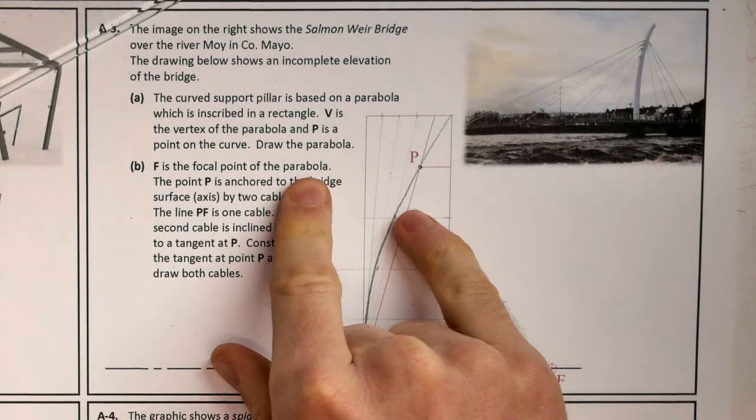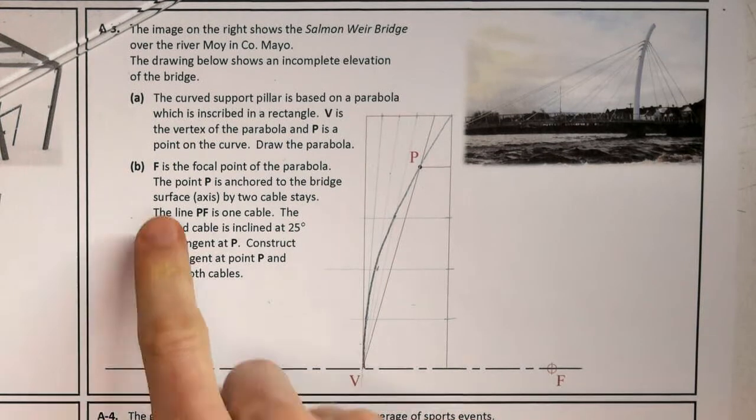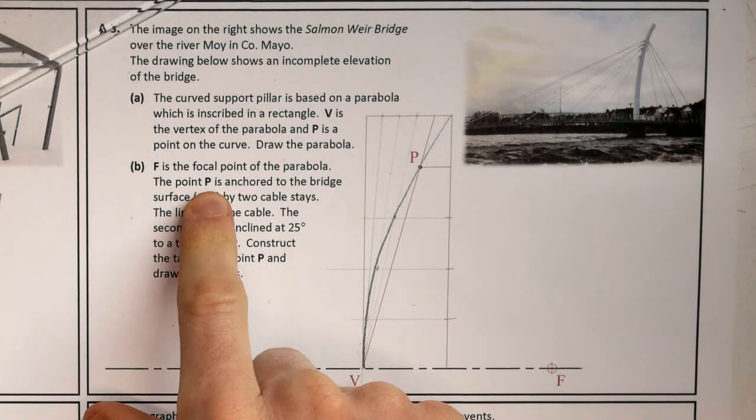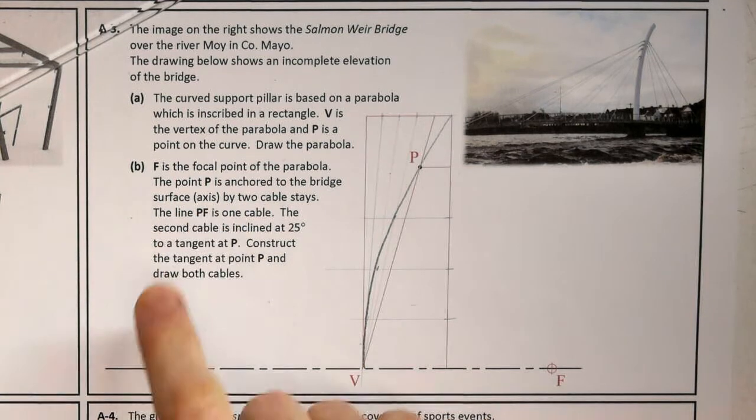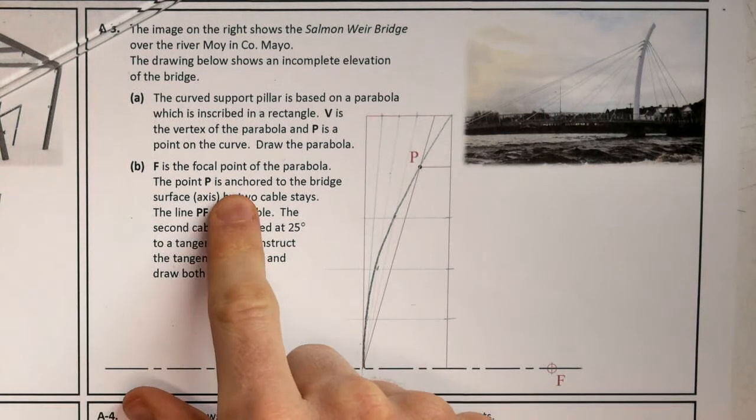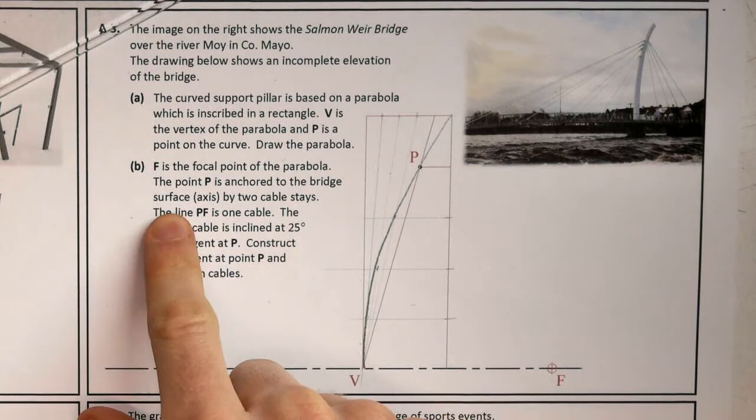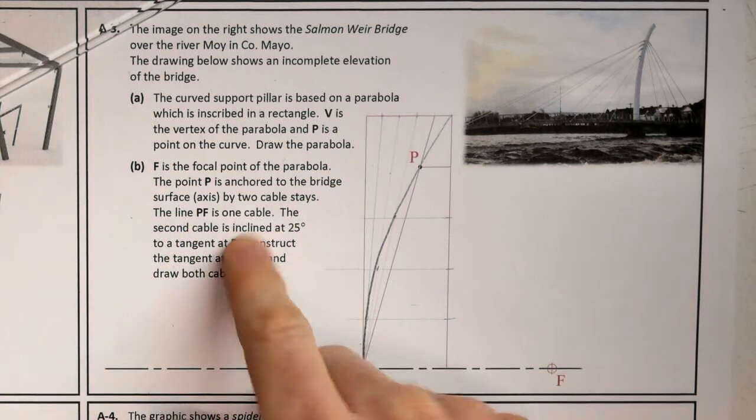Part B: F is the focal point of the parabola here. Point P is anchored to the bridge surface by two cables.